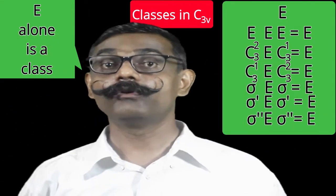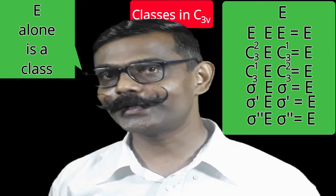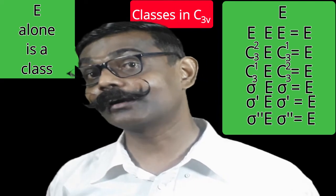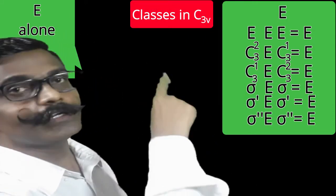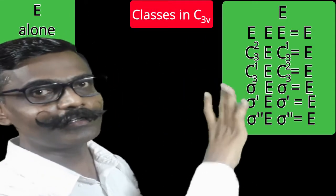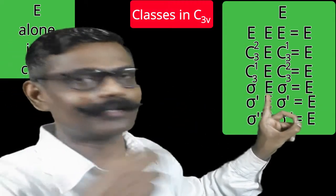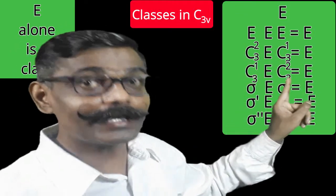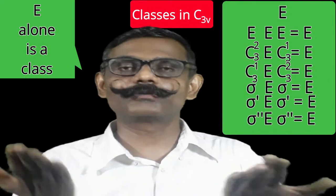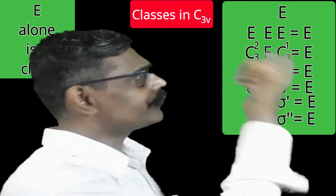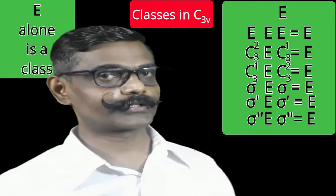For identity, I want to obtain all similarity transforms to find who is conjugate to identity and how many members are in its class. First: x⁻¹ × E × x. Taking x as identity, inverse of identity is identity, so E × E × E = E. Identity is conjugate to identity.